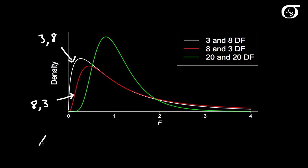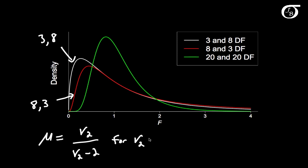It can be shown that the mean of an F distribution is equal to the degrees of freedom in the denominator over the degrees of freedom in the denominator minus 2, for cases where the degrees of freedom in the denominator is greater than 2. So for instance in this green F distribution, which has 20 degrees of freedom in the numerator and 20 in the denominator, the mean is going to be 20 over 18.